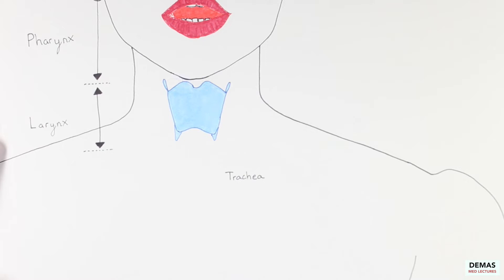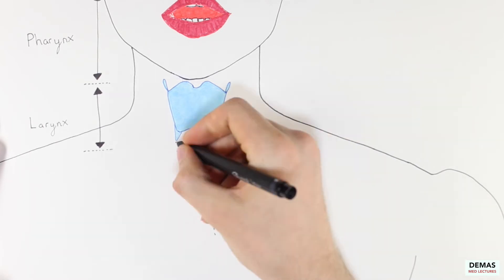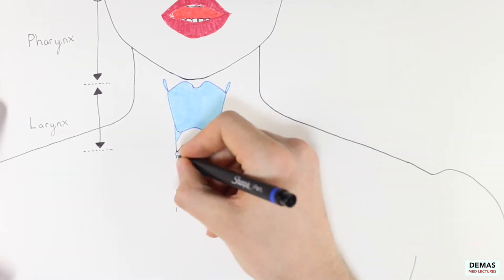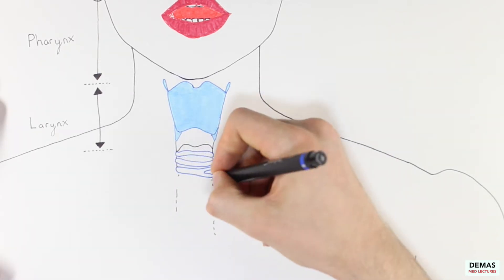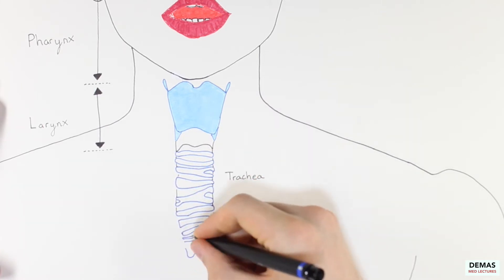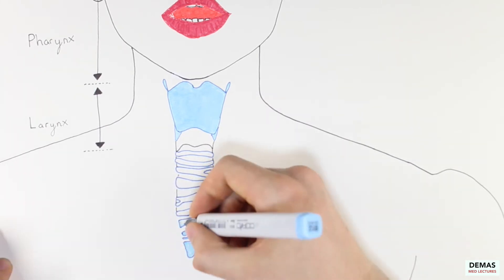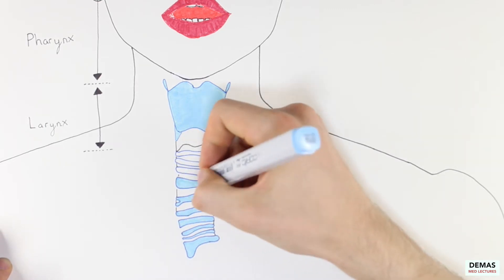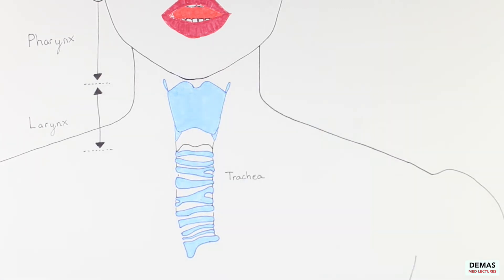We will start with a discussion of the conducting division of the respiratory system starting with the trachea. The trachea extends from the larynx to the bifurcation of the two primary bronchi. The trachea would be quite compressible and prone to collapse if not for the cartilaginous cage surrounding the tube. There are c-shaped rings of hyaline cartilage within the trachea. These rings open in the back and provide the structural integrity of the trachea.